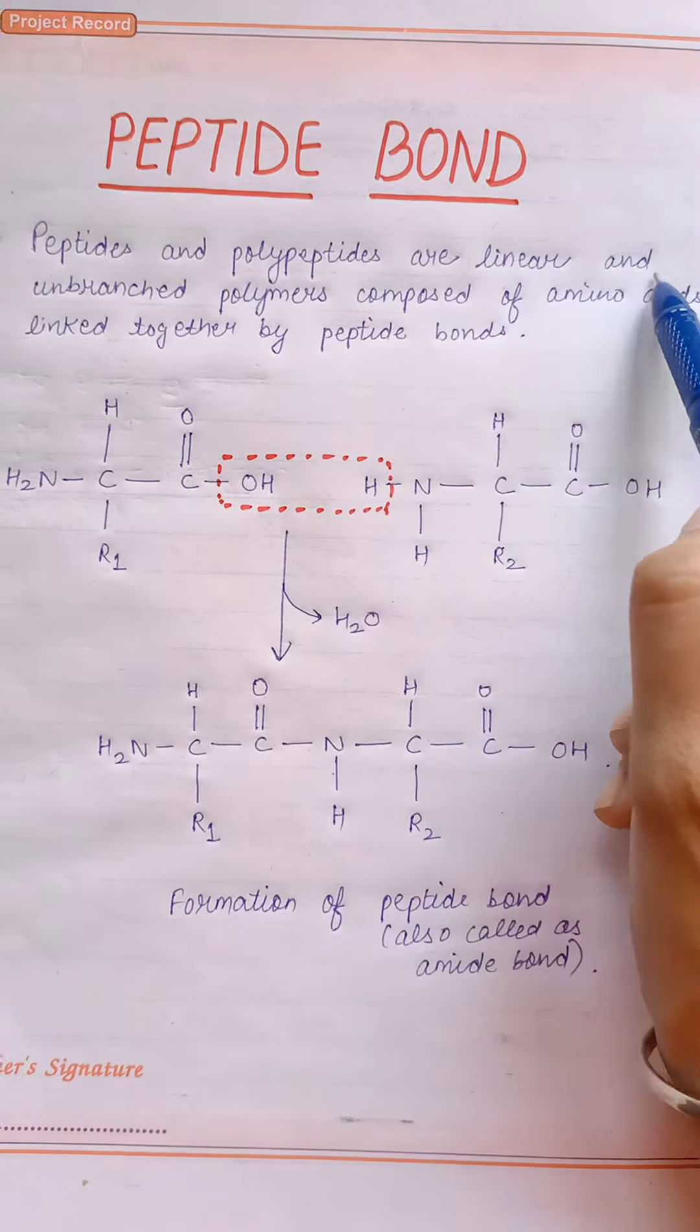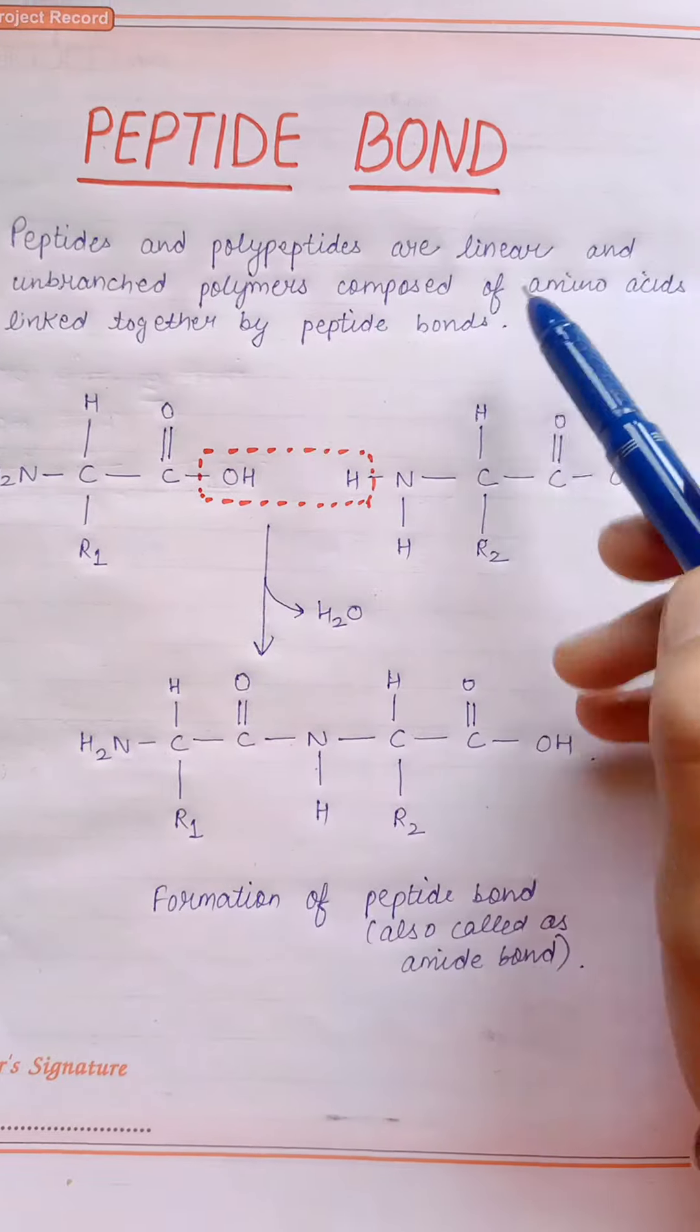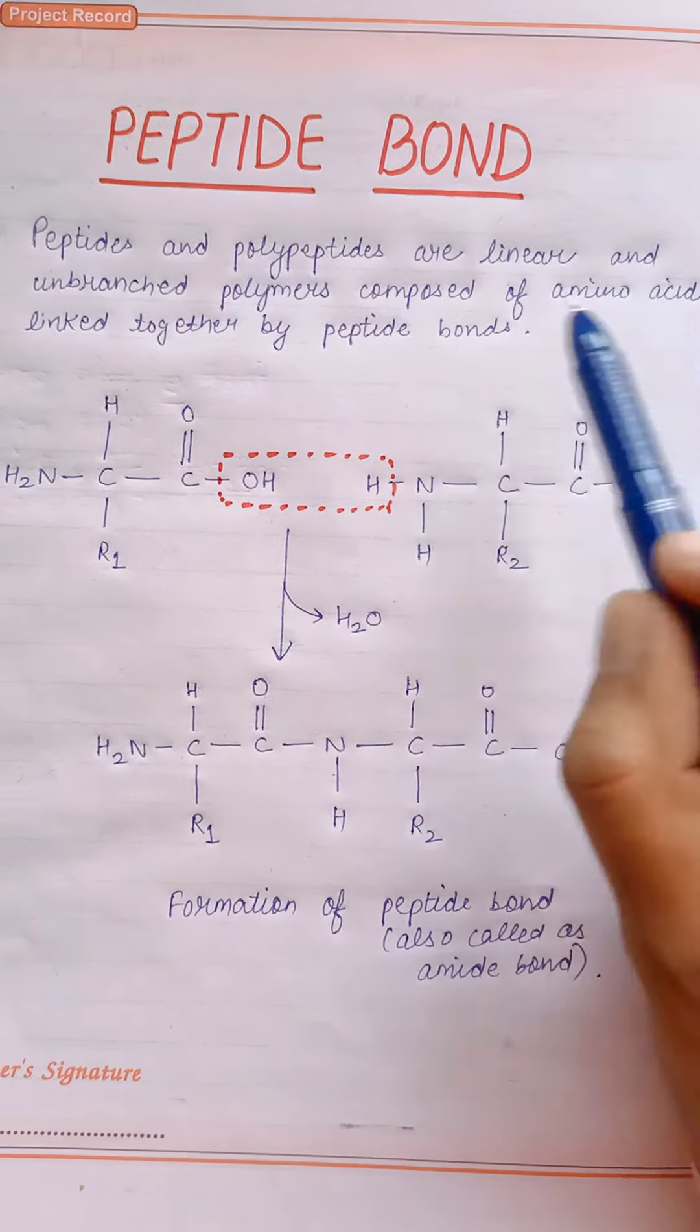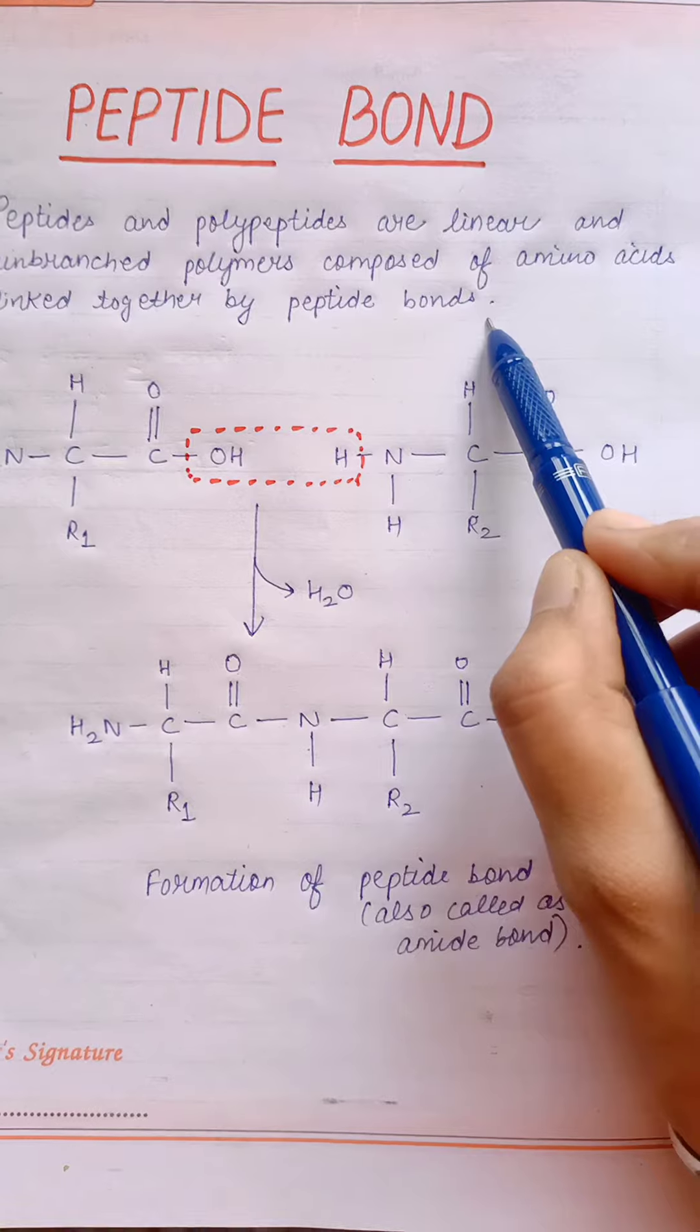Peptides and polypeptides are linear and unbranched polymers composed of amino acids linked together by peptide bonds.